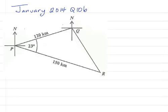January 2014, question 10b. The diagram below, not drawn to scale, shows the position of three points P, Q, and R on a horizontal plane. PQ is 120 kilometers, PR is 150 kilometers, and angle QPR is 23 degrees.